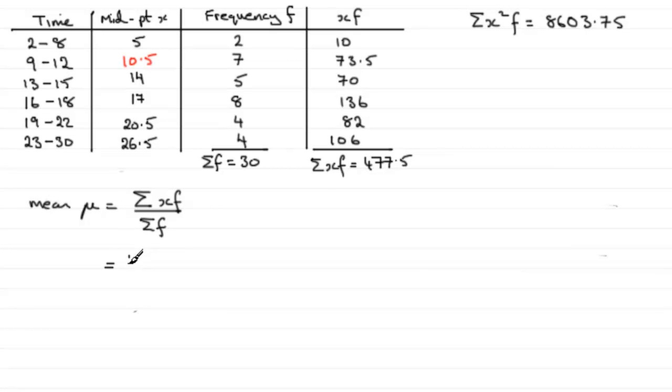So when it comes to working out the mean μ, all you've got to do then is 477.5 for Sigma xf divided by Sigma f, which was the 30. If you work that out, what you get is 15.916 recurring, and if you round that to one decimal place, that's going to be 15.9 (1 DP).